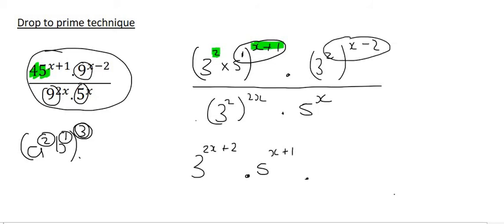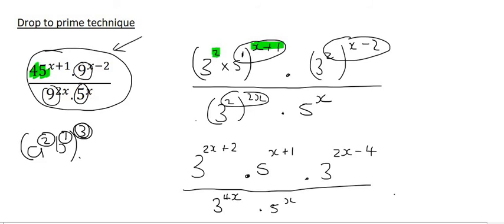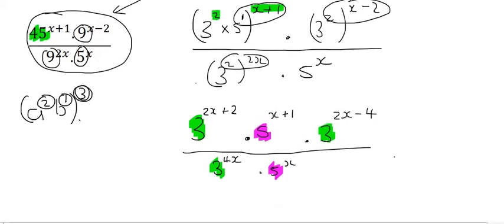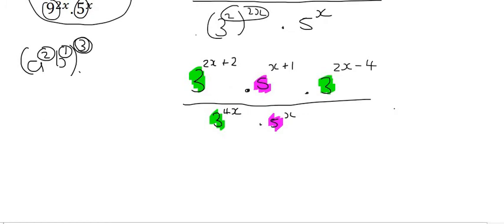I'm now going to do this part here where we multiply. So that's going to be 3 to the power of 2x minus 4. Moving to the bottom, we're going to multiply over there. And so we get 3 to the power of 4x and then 5x. So have a look what we've done. We've gone from an expression like this where there wasn't much in common to having only 3s and 5s. And now that means we can combine.